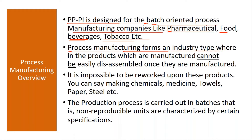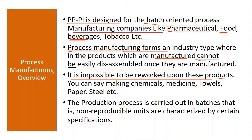Process manufacturing forms an industry type where the products which are manufactured cannot be easily disassembled once they are manufactured. Once the product is ready, you cannot go back to the original raw materials — like ice cream, or tablets that we take for fever. Once you make them, you cannot go back to the original materials. It is impossible to rework on these products. Examples include chemicals, medicines, towels, paper, and steel industries.